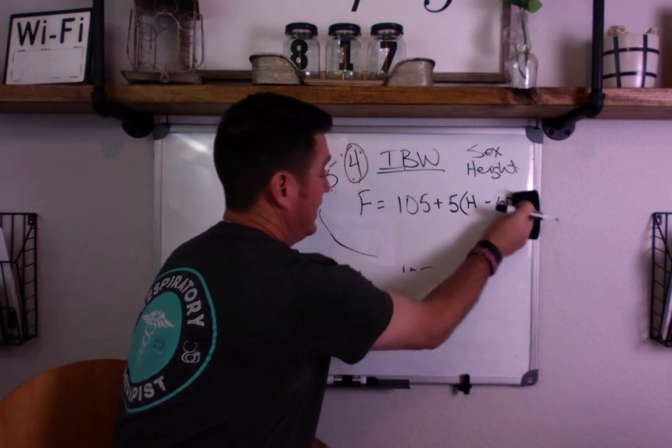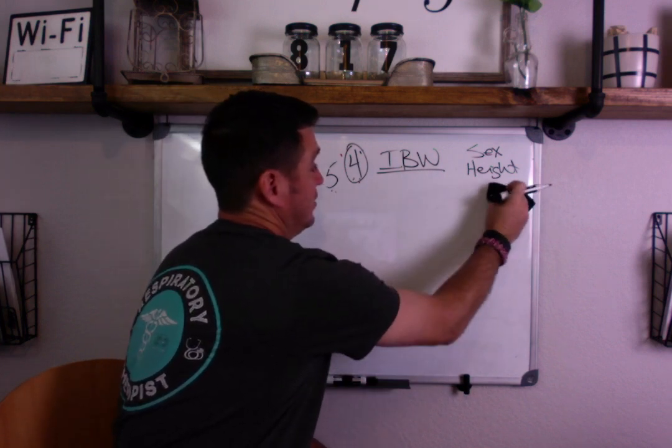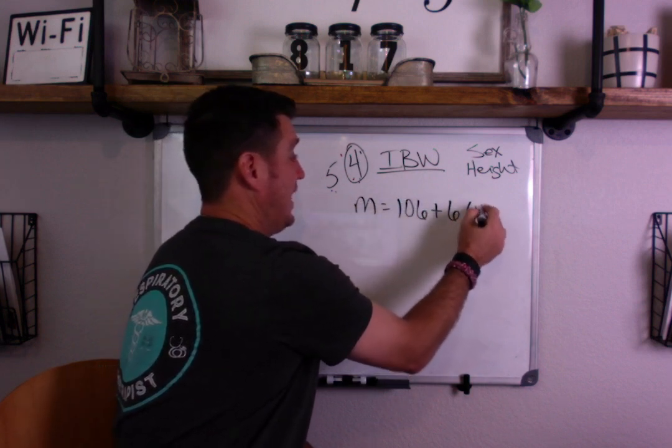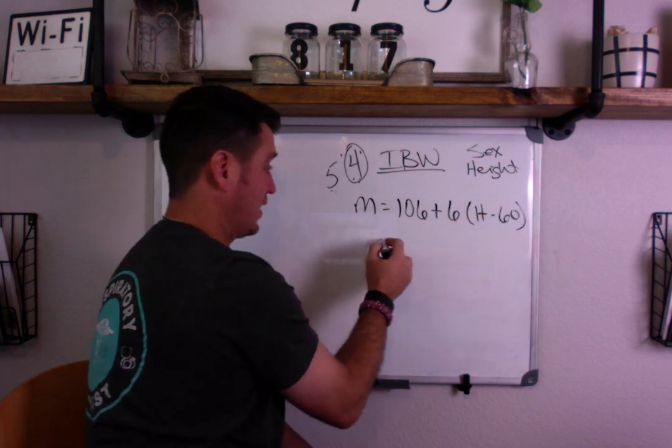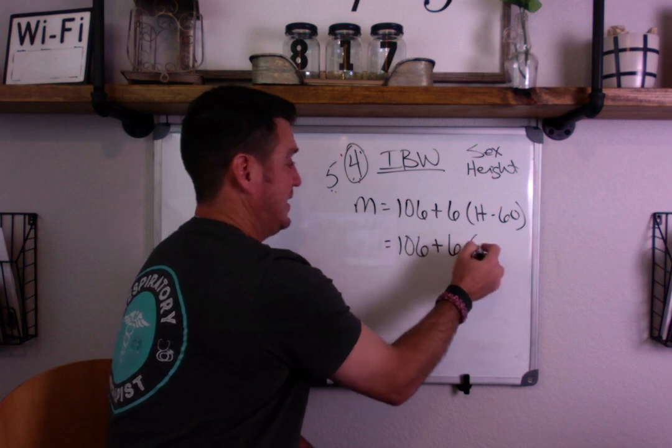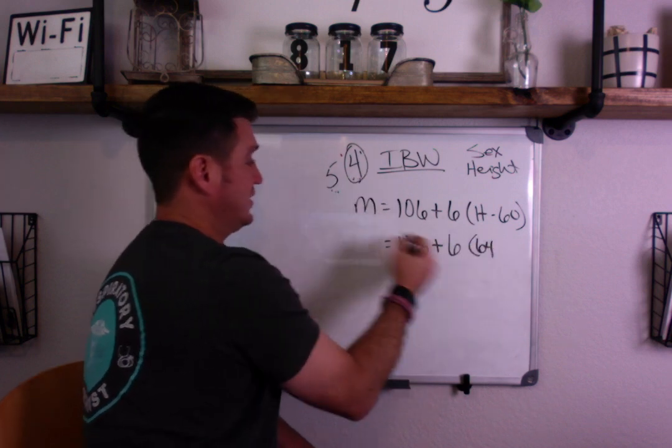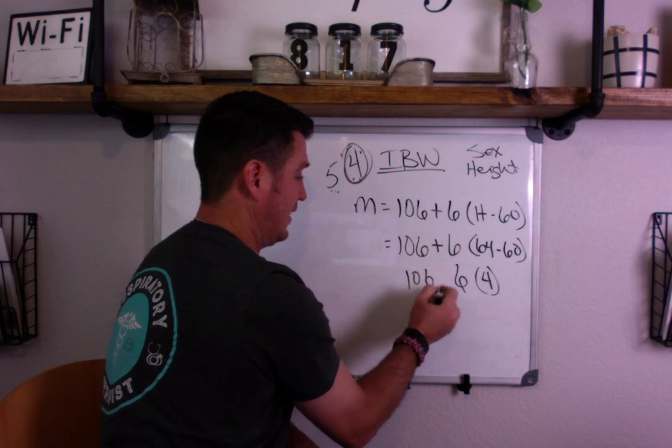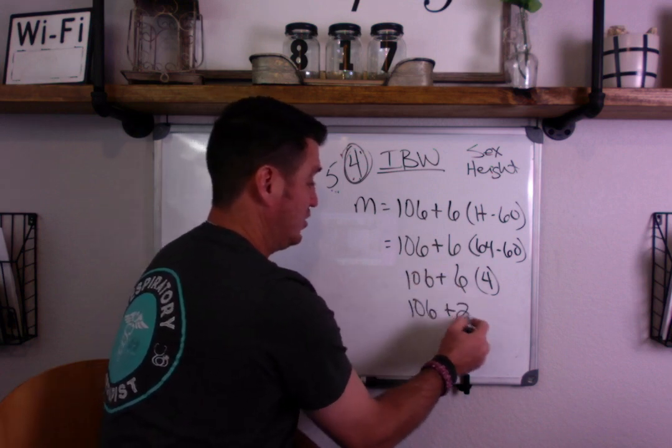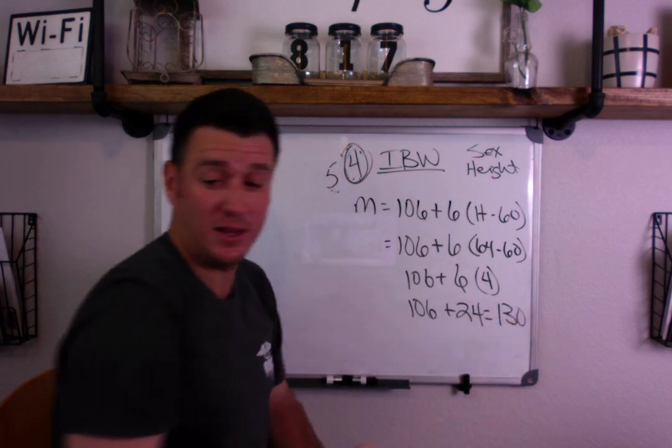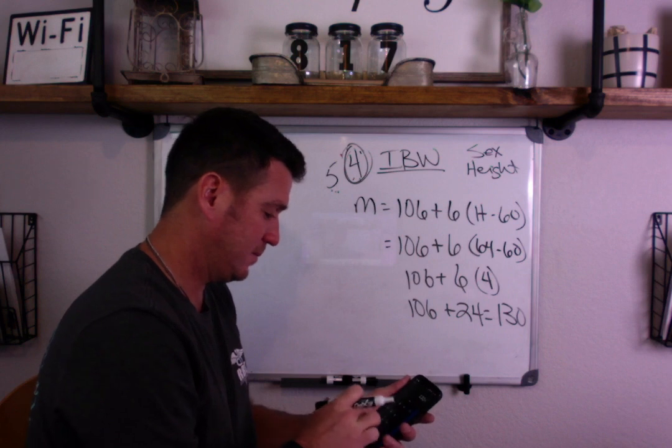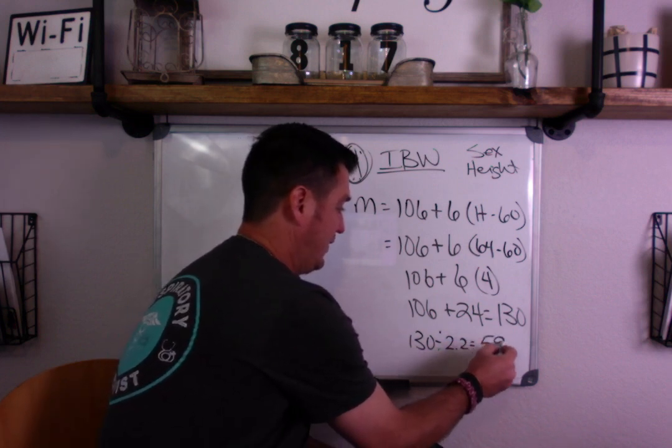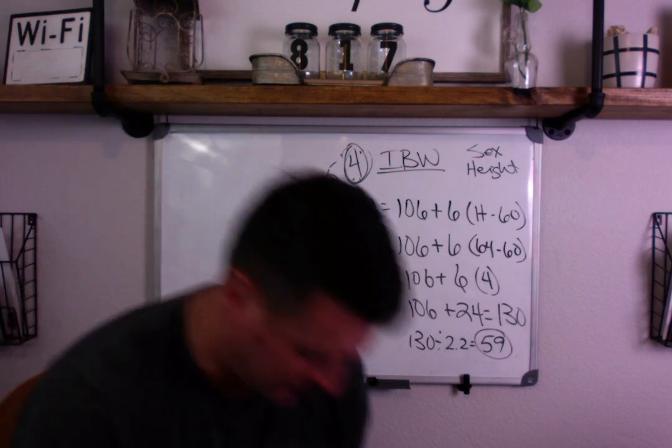That's how we do for females. So let's do one for males now. So remember, males are slightly different. So let's just go with a 5'4" male. Remember, male is 106 plus 6 times height minus 60. So we're going to do 106 plus 6. This is 64. 5'4" is 64 inches minus 60. Again, this 4 is what's going to translate down there. So now we have 106 plus 24 equals 130. 130 divided by 2.2 equals 59 kilograms.